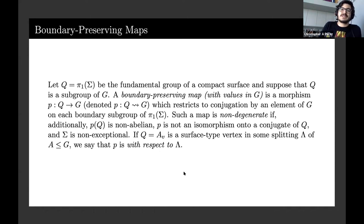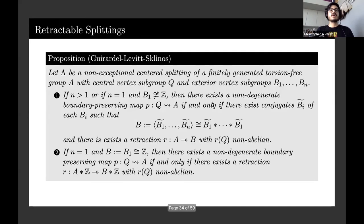If Q is the fundamental group of a compact surface and if it's a subgroup of G, we call P from Q to G a boundary preserving map with values in G. I'm going to explain why I chose this notation later - it's kind of a joke. It's a boundary preserving map if it restricts the conjugation by an element of G on each boundary subgroup of the surface group. The map is non-degenerate if the image is not abelian, P is not an isomorphism onto one of the conjugates, and the surface is not exceptional. We can similarly define the same sort of thing if we have a surface type vertex in a splitting of some other subgroup of G.